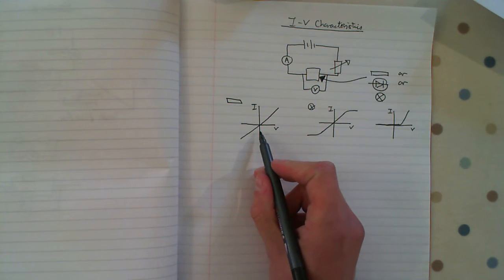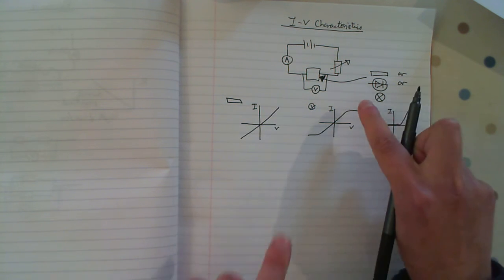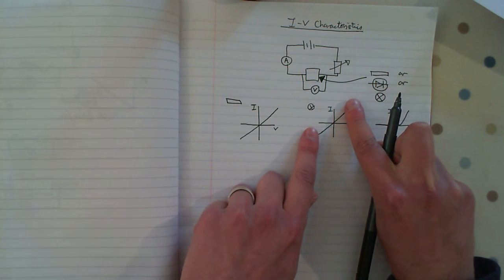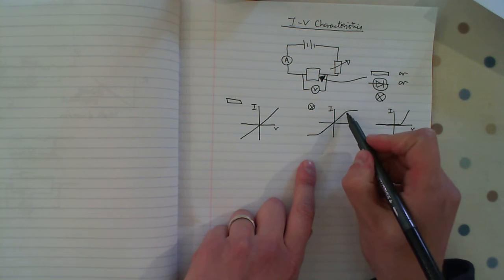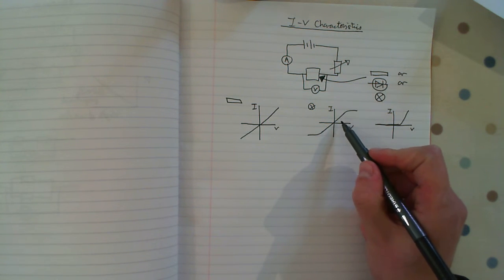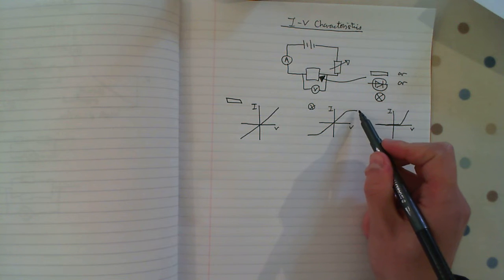Direct proportional for the ohmic resistor. Direct proportional in the middle portion for the filament bulb, and then it plateaus because the filament bulb's got hotter, so resistance increases and the current plateaus.